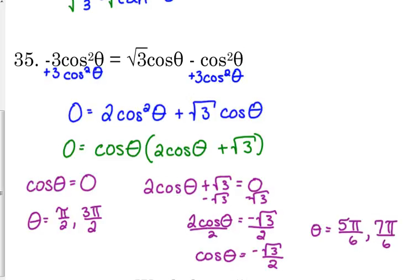So here are the four solutions. You don't necessarily always have four solutions with quadratic trig equations — most of the time you do, but not all of the time. Here's my paper — I want to show you one more.